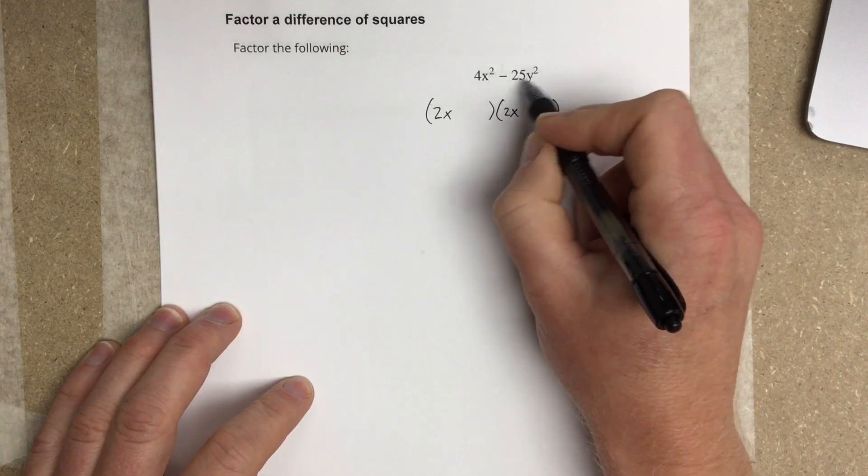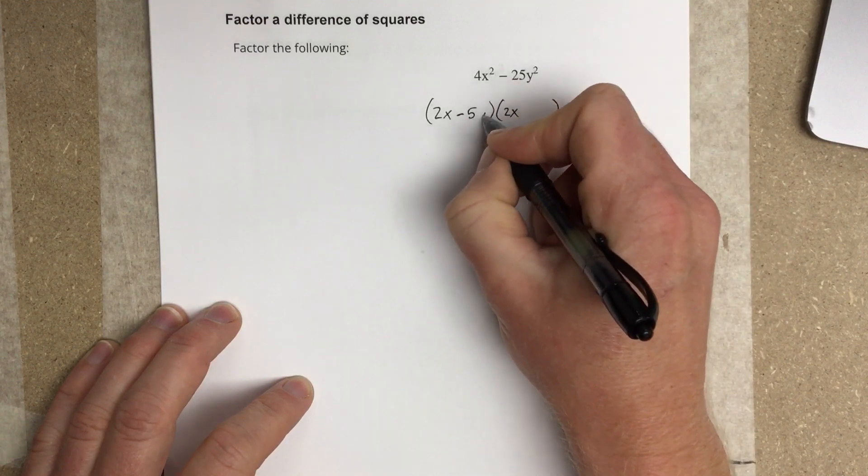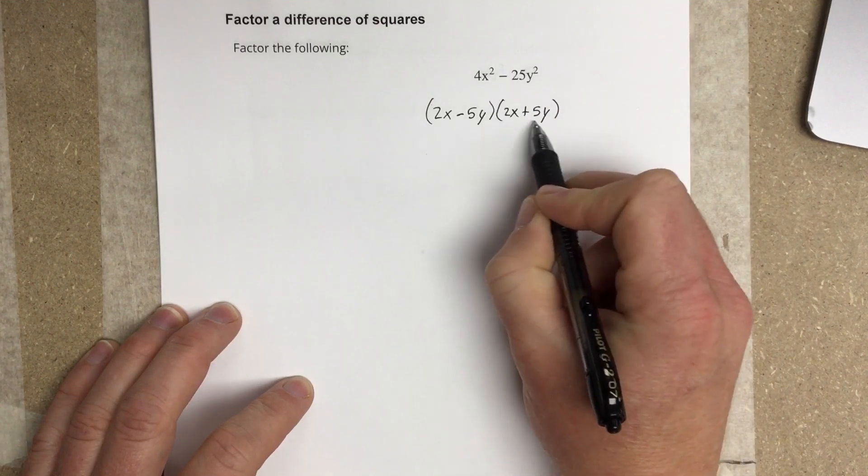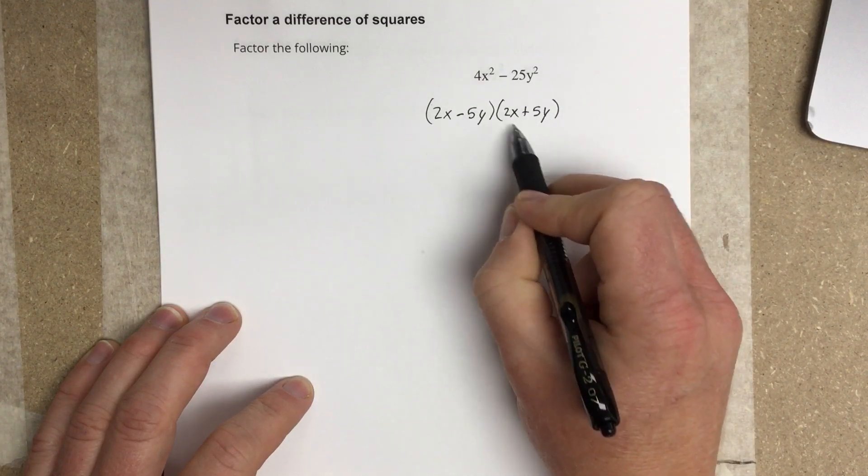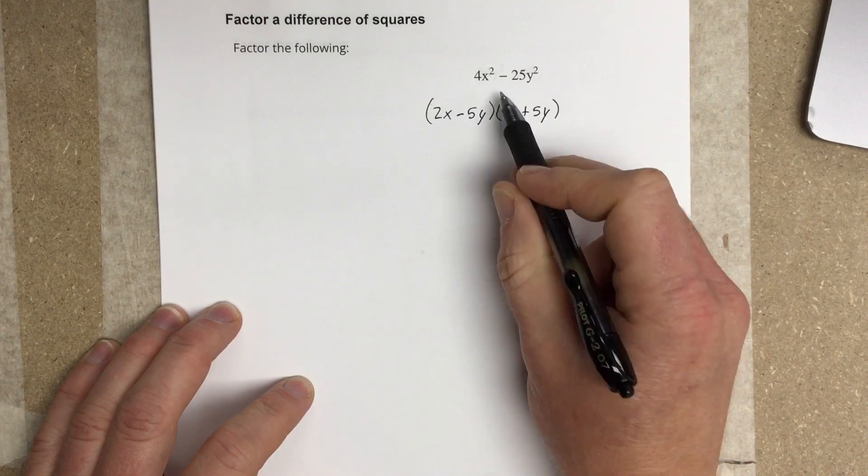And then do the same thing with the square rooting here. You have 1 minus 5y, and then 1 plus 5y. So I have the conjugate of the first term written in the second term. That ensures that the middle term will cancel out.